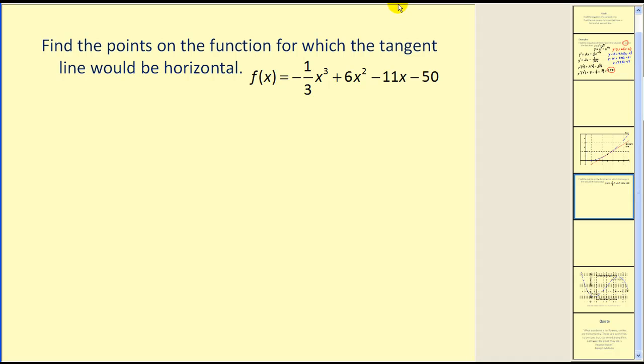Let's take a look at another example. Find the points on the function for which the tangent line would be horizontal. While all horizontal lines have a slope of zero, so on this problem we need to find where the derivative will be equal to zero. Remember the derivative gives us the slope of the tangent lines. So let's find our derivative and set it equal to zero.